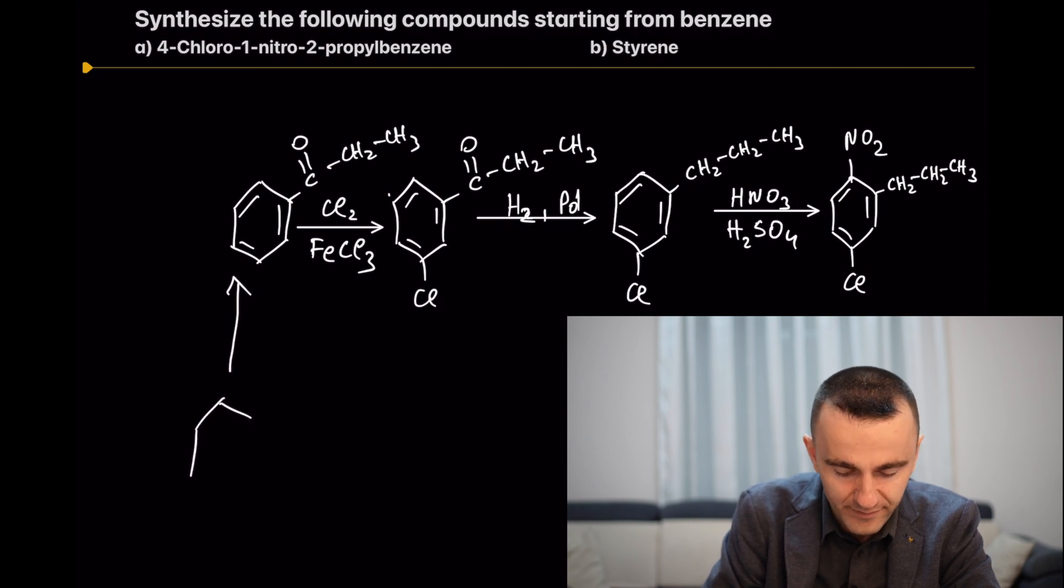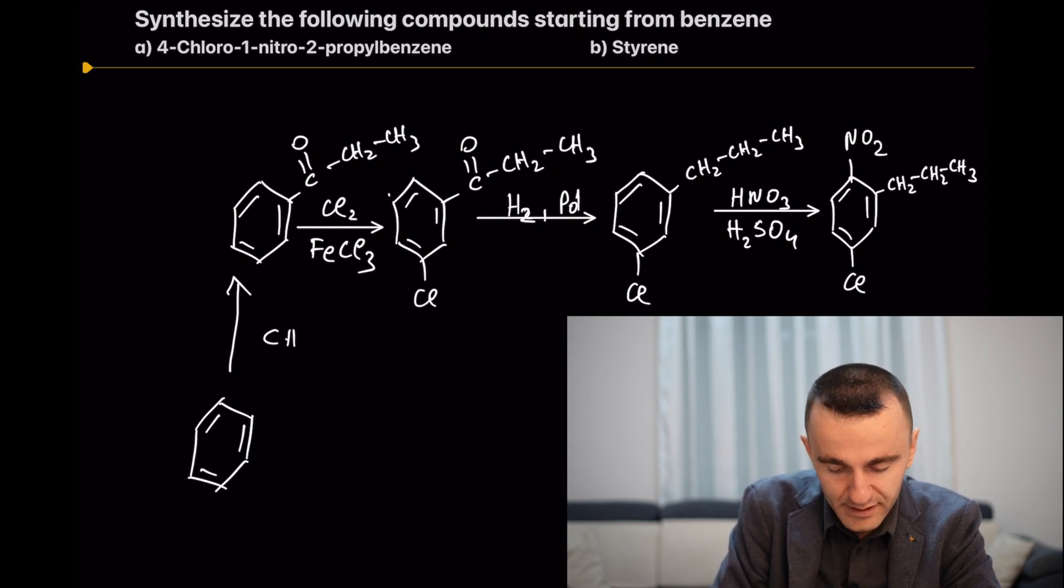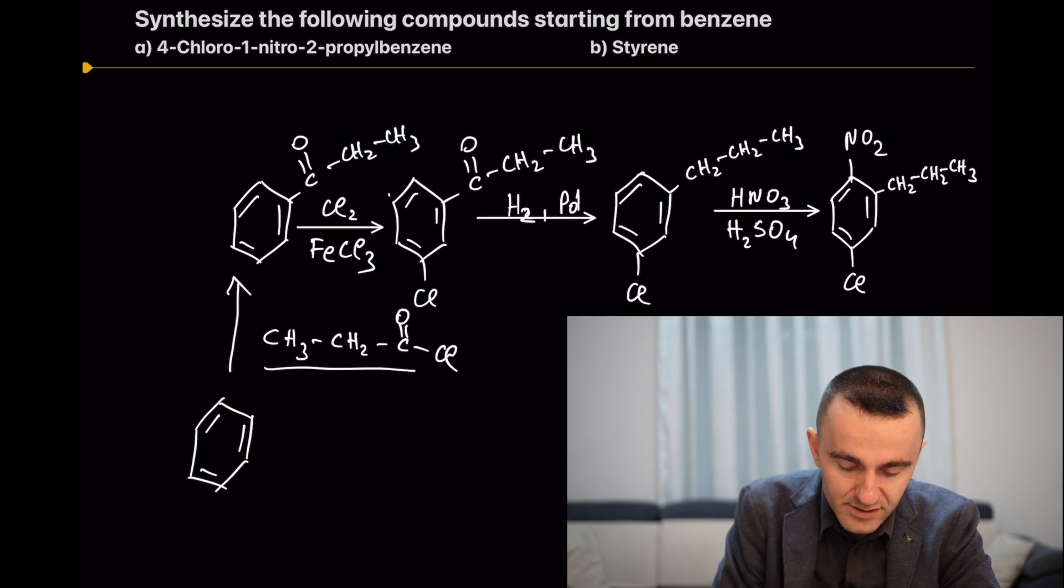We have a benzene ring, and this benzene ring is treated with an acyl chloride—in this case, CH3CH2C=O-Cl—in the presence of aluminum trichloride as a catalyst.